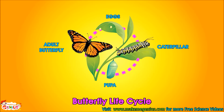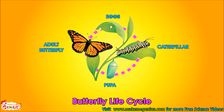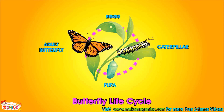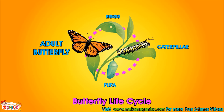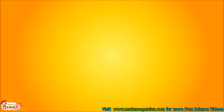Look at this — it shows the complete life cycle of a butterfly. First these are eggs, then caterpillar, then pupa, and after that a complete butterfly comes out.